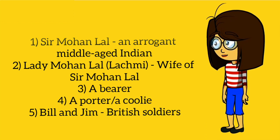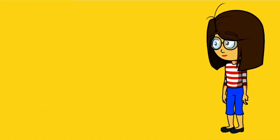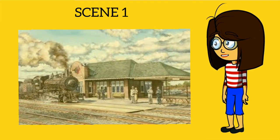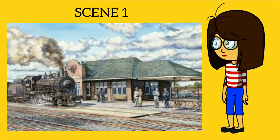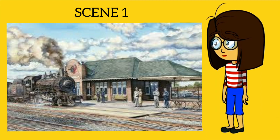Scene 1 is set in the waiting room of an Indian railway station. Sir Mohanlal is a middle-aged Indian who works in the British Raj. He is ashamed to be an Indian and tries to speak in English and dresses up as a high-ranked British official. In those days, the first-class compartment in the train was only meant for British people, yet Mohanlal travels in it as if he considers himself British. Mohanlal always feels inferior being an Indian.